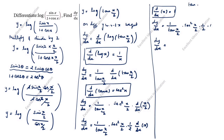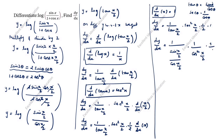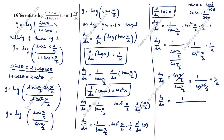Now we expand: tan theta is equal to sin theta by cos theta, so 1 by tan(x by 2) becomes cos(x by 2) divided by sin(x by 2). And secant square means 1 by cos square(x by 2). So dy by dx is equal to [cos(x by 2) divided by sin(x by 2)] into [1 by cos square(x by 2)] into 1 by 2. One cos(x by 2) cancels, leaving 1 divided by 2 sin(x by 2) cos(x by 2).